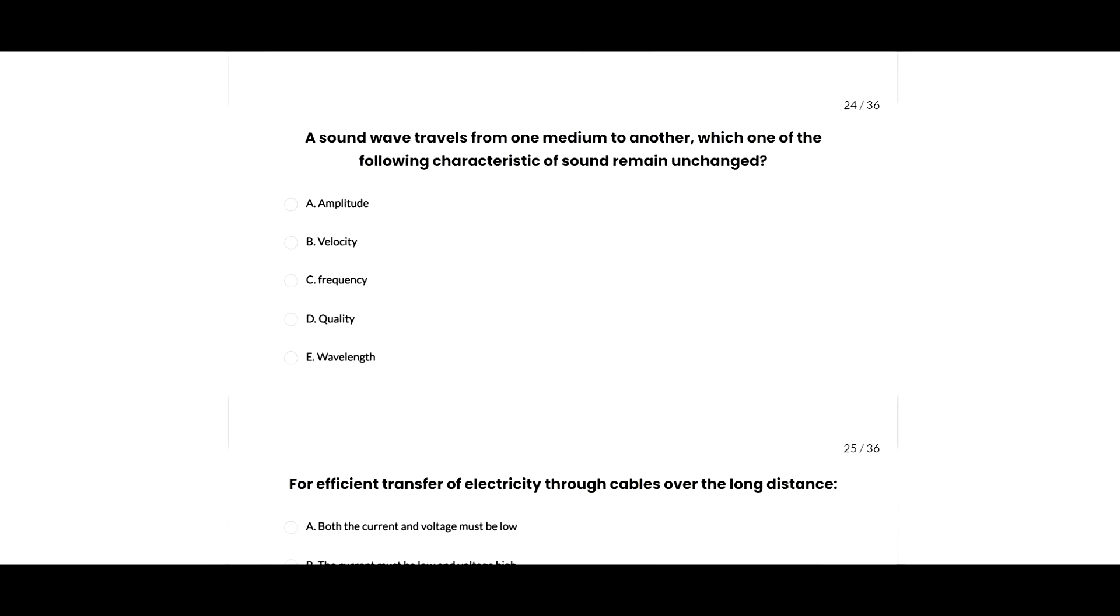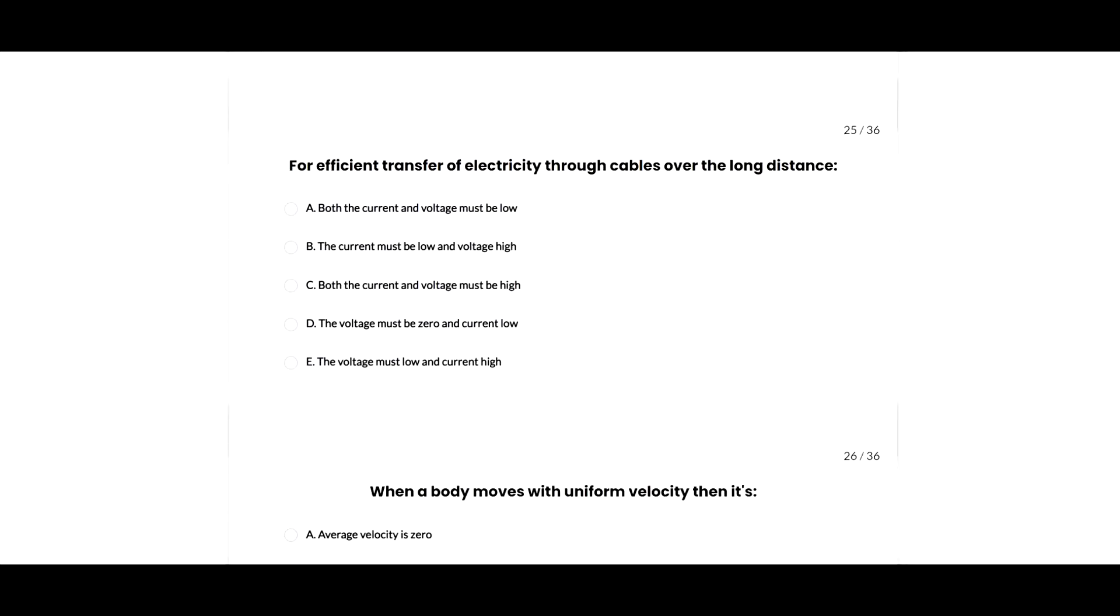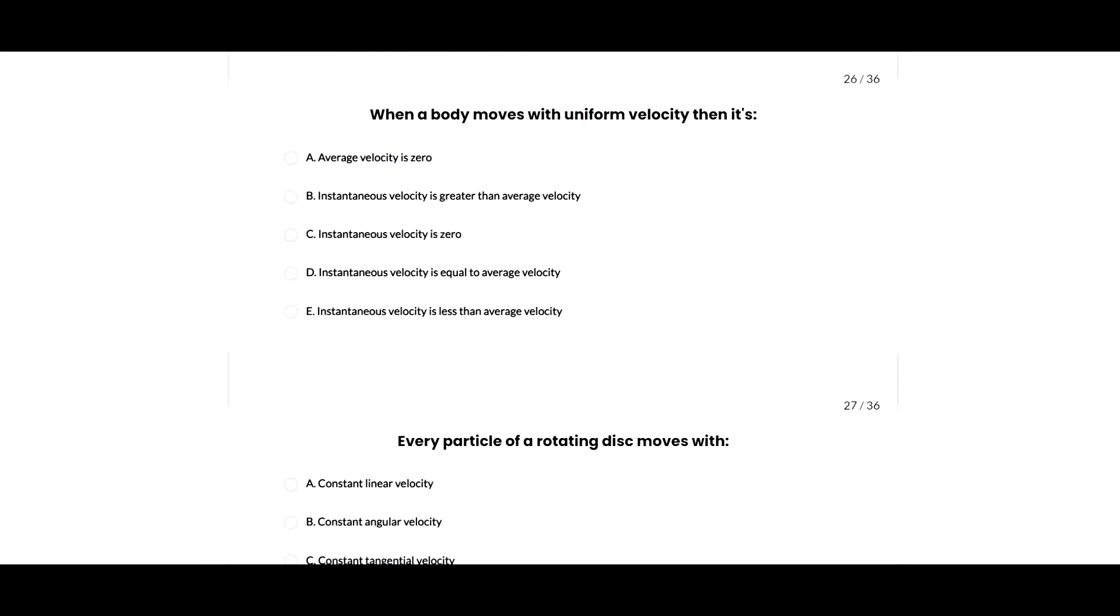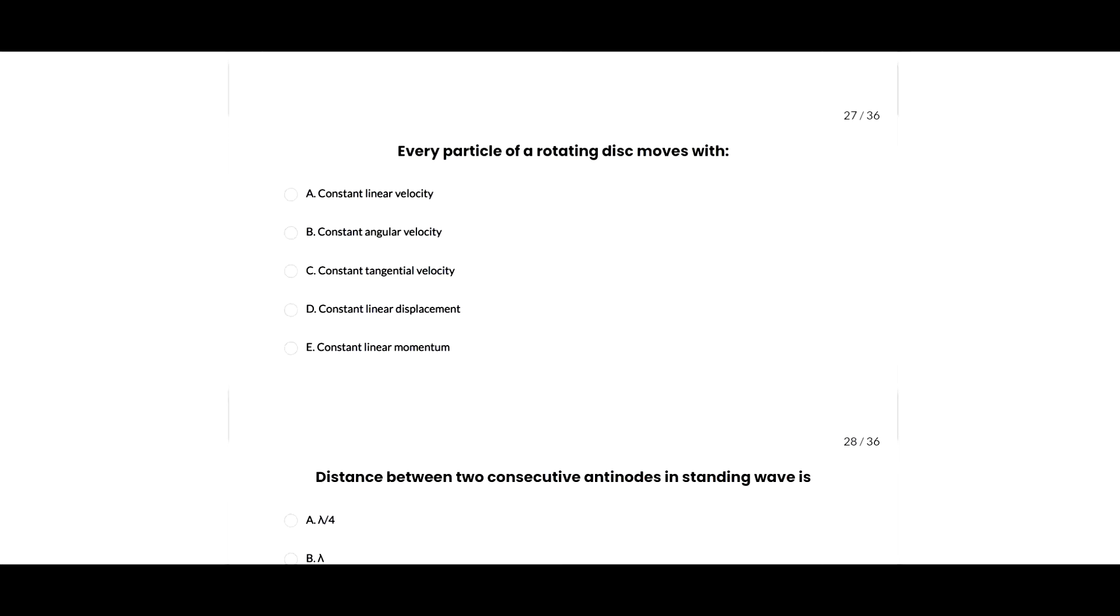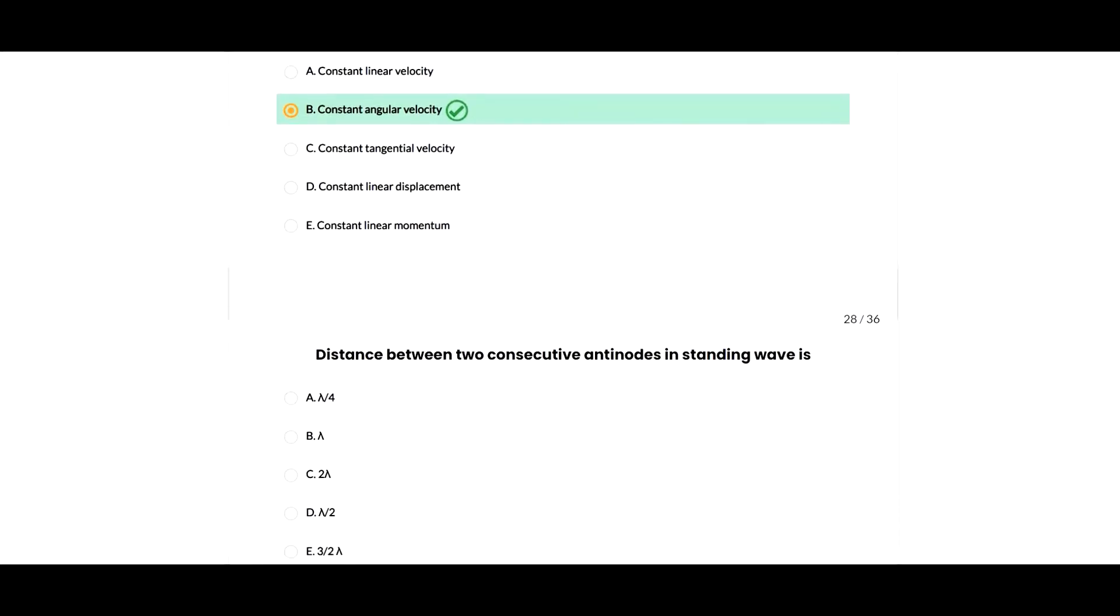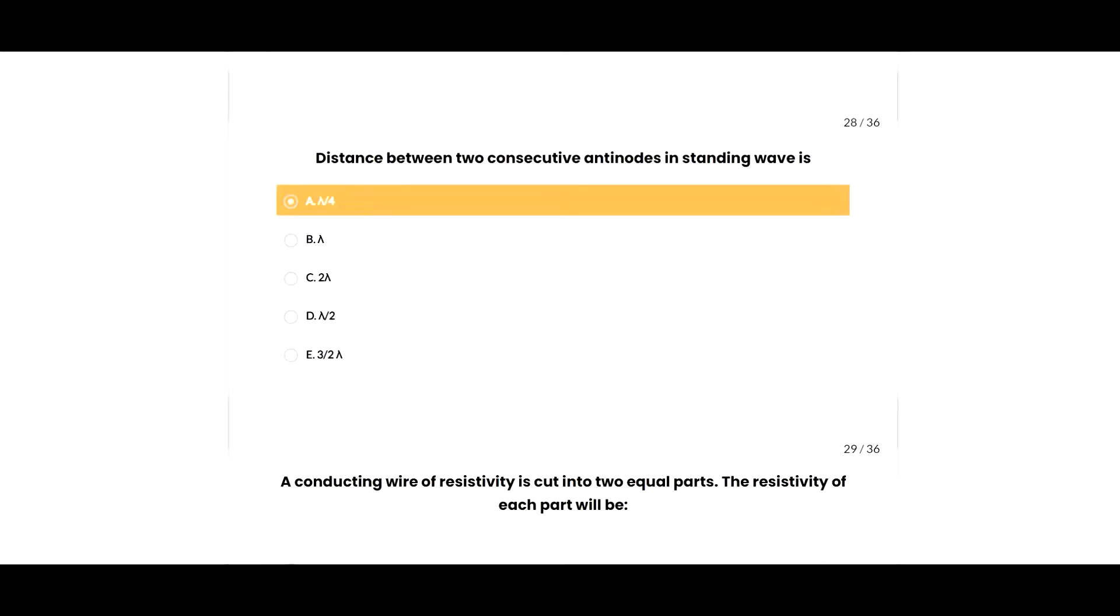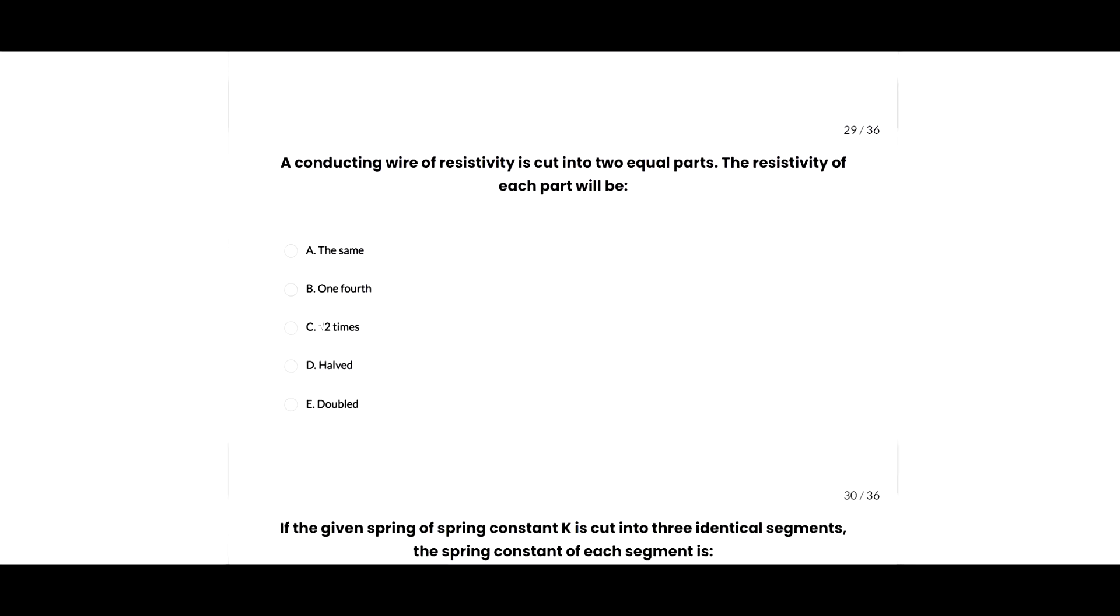Next question: when a sound wave travels from one medium to another, the frequency remains unchanged, so C option is correct. Next: when a body moves with uniform velocity, its instantaneous velocity is equal to the average velocity, so A option is correct. Next: every particle of a rotating disk moves with a constant angular velocity. Next: the distance between two consecutive antinodes in a standing wave is lambda by 2, half wavelength.